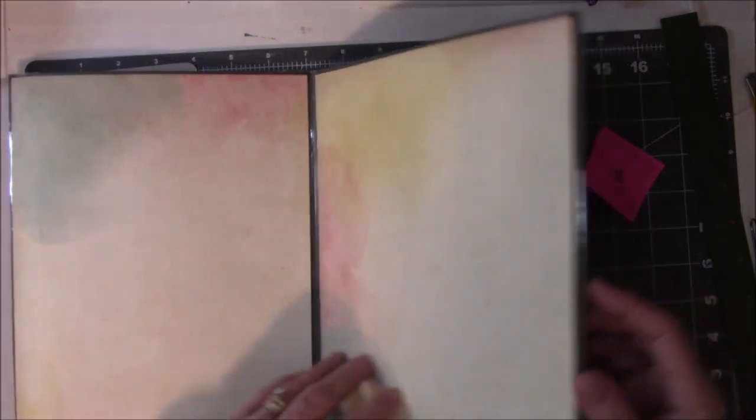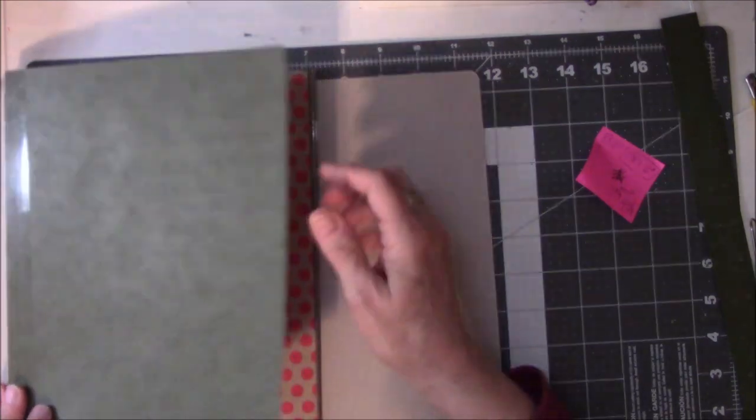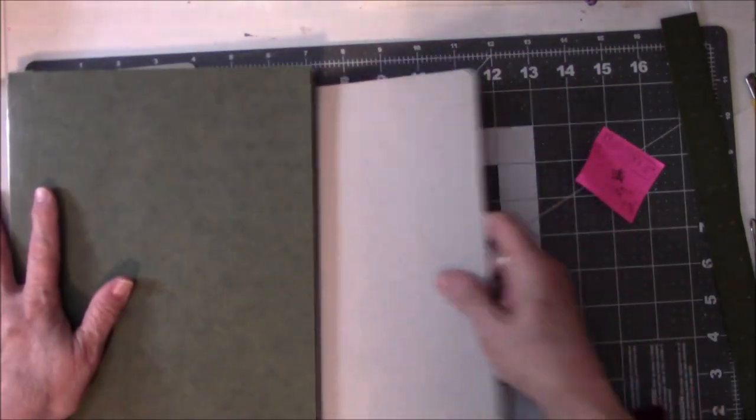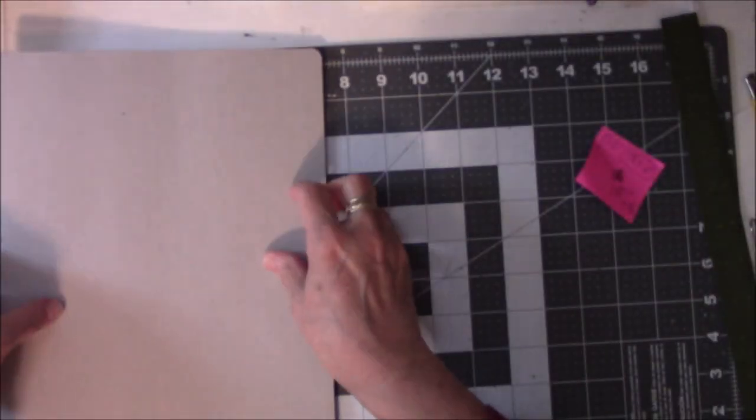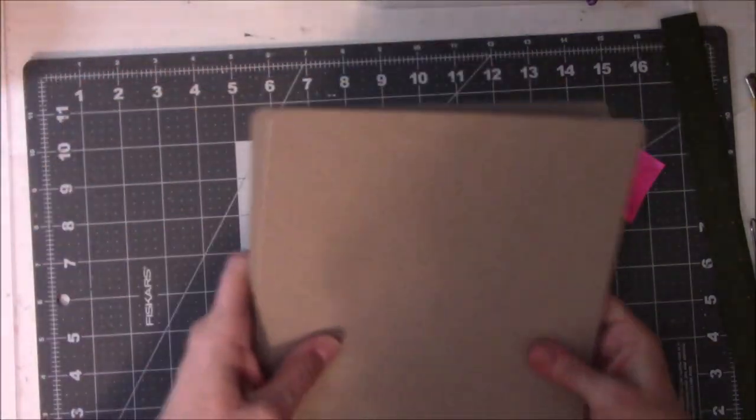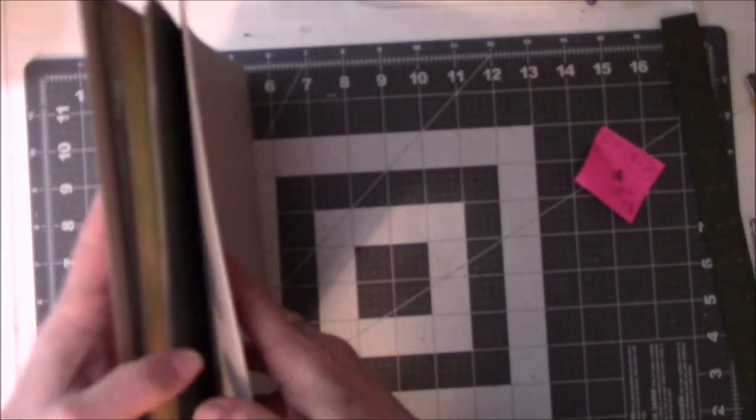I wanted to overlap the green file folder so you can open the accordion book comfortably without the front and the back whacking each other when you open it up. So there's the front and the back, then I have to cut those down to size.